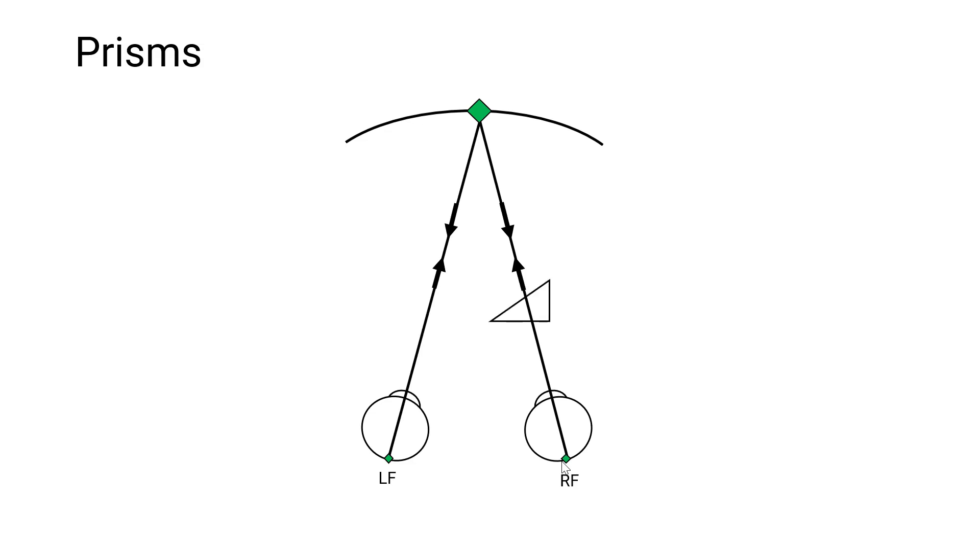What if I put a prism before one of the eyes? So here we have a prism. For the purposes of this illustration, this is considered the base of the prism. So this is a base-out prism because the base is towards the ear rather than towards the nose. Using the principles we just went over, light bends towards the base, so we'll see that occur.